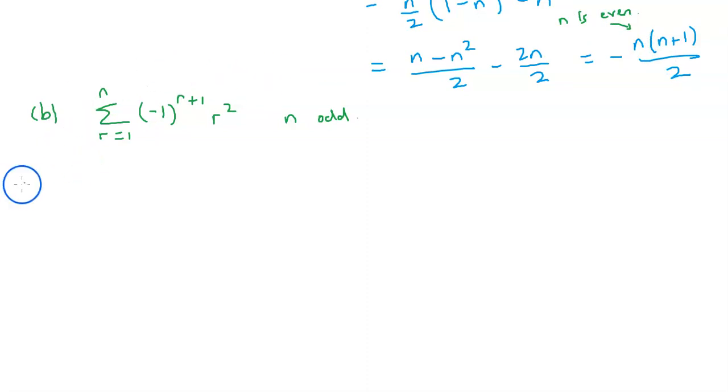It's pretty clear what to do here. Let's use all our hard work from the previous problem to solve this one. If n is odd, then n minus 1 is even. And this is clearly equal to the sum from r equals 1 to n minus 1 of negative 1 to the power of r plus 1 times r squared, plus the last term. Since n is odd, n plus 1 is even, so it's just plus n squared.